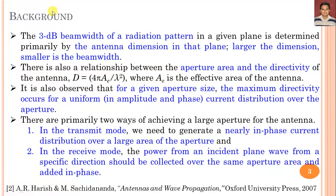To understand the basic principle of reflector antennas, we first need to know the basic concepts of aperture antennas and some important analysis discussed in prior lectures. In aperture antennas, we discussed the field radiated by aperture antennas, in which one parameter — the (1 + cos θ) term — appears in free space.